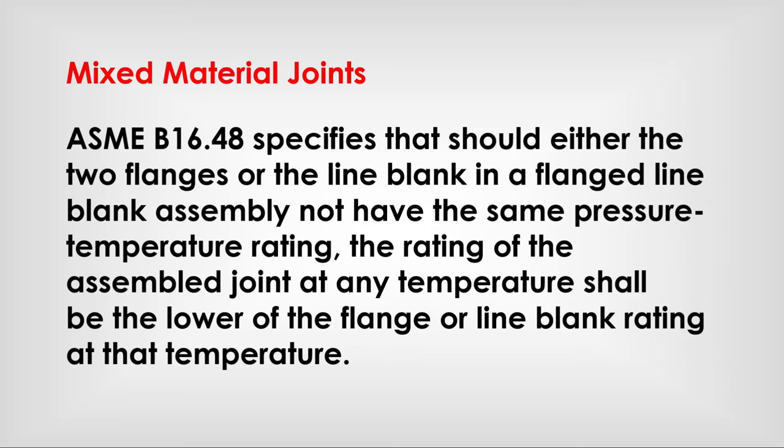Mixed Material Joints: ASME B16.48 specifies that should either the two flanges or the lined blank — any flanged lined blank assembly — not have the same pressure-temperature rating, the rating of the assembled joint at any temperature shall be the lower of the flange or lined blank ratings at that temperature.